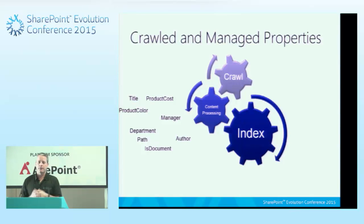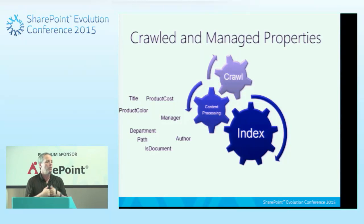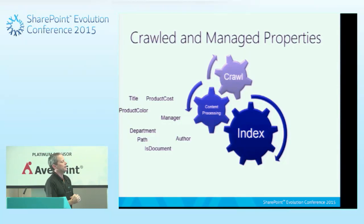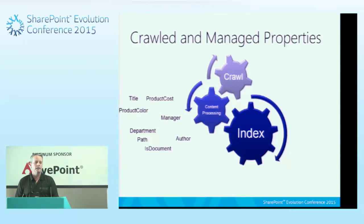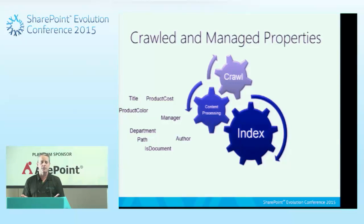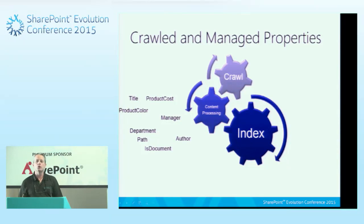The content processor finds properties on those lists and libraries — you might call them columns. If you're using site columns in SharePoint 2013, you're ahead of the game; they're automatically turned into searchable columns. We manage these properties through content processing, turning columns into names we know we'll use in queries. For instance, I might call the managed property 'product cost' regardless of what the crawled property is named. There are also built-in properties like isDocument and isMyDocuments.